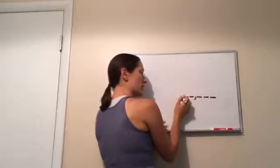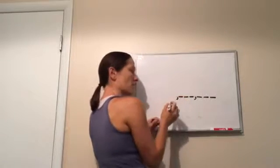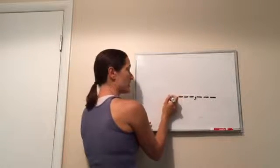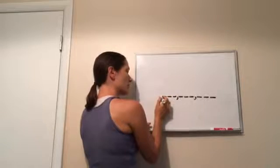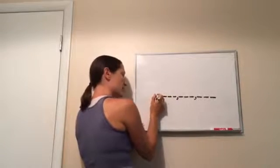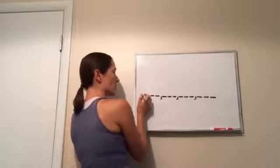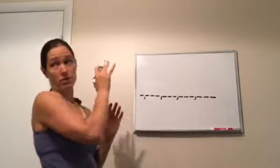Thousands, ten thousands, hundred thousands, comma, millions, ten millions, hundred millions, comma, billions, ten billions, hundred billions, comma, trillions, and so forth.